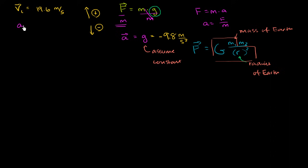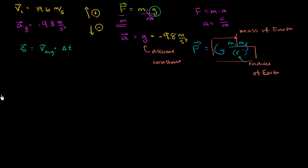So the acceleration due to gravity is negative 9.8 meters per second squared, and I want to plot displacement versus time. Let's think about how we can derive a formula where we input time and get displacement. We know that displacement equals average velocity times change in time. Right now we have something in terms of time and average velocity, but not in terms of initial velocity and acceleration. We know that average velocity equals initial velocity plus final velocity over 2, assuming constant acceleration.